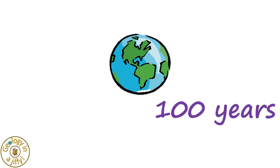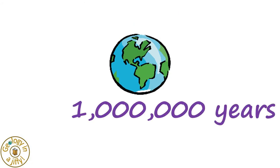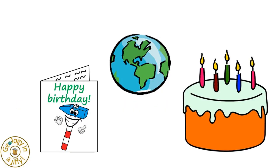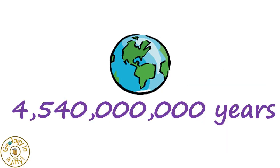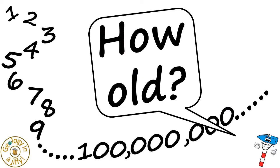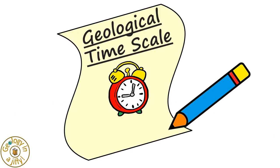Not one hundred years, or a thousand years, or a million years, or even a billion years. Scientists think that the Earth was made over four and a half billion years ago. The Geological Timescale describes the order and duration of major events on Earth over the last four and a half billion years.